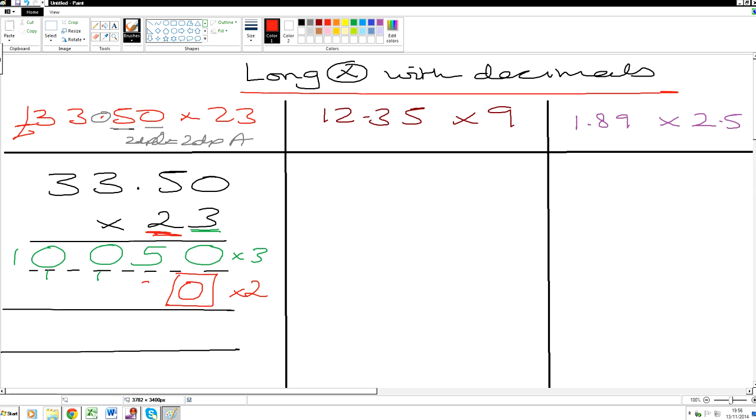So 0 times 2 is 0. 5 times 2 is 10. 3 times 2 is 6. Add 1 is 7. 3 times 2 is 6. Now add it all up.